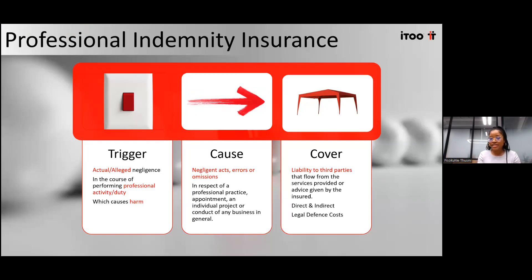The cover is any liability flowing from third parties from any services provided by the professional. It can be either direct or indirect, and we cover the legal defense costs of the third party as well as any damages awarded to them. We also cover the insured's own legal defense costs, investigation costs such as the cost of appointing a loss adjuster or an attorney, and any other costs that the third party may be awarded.